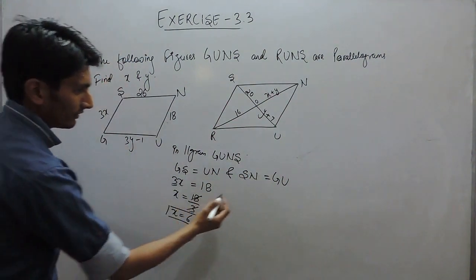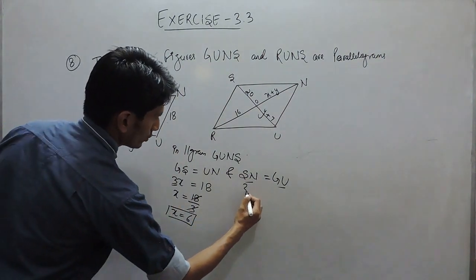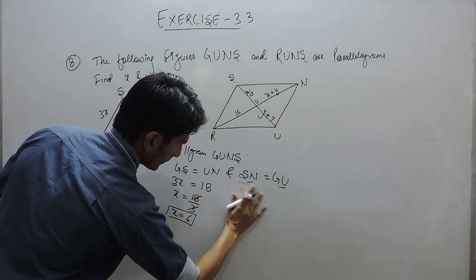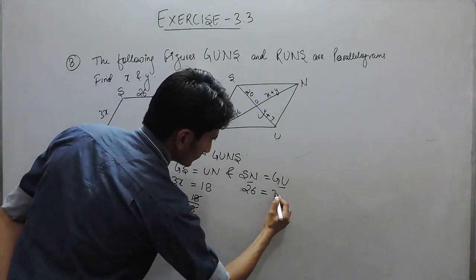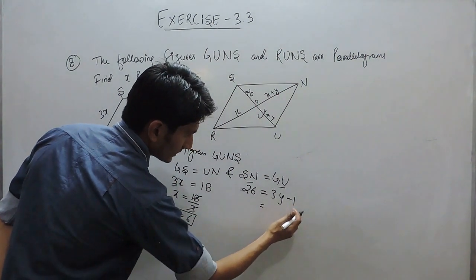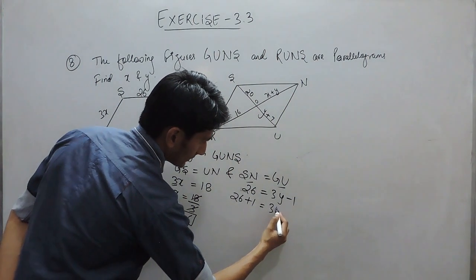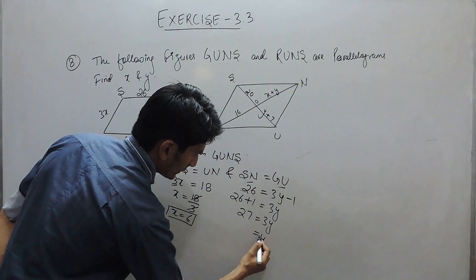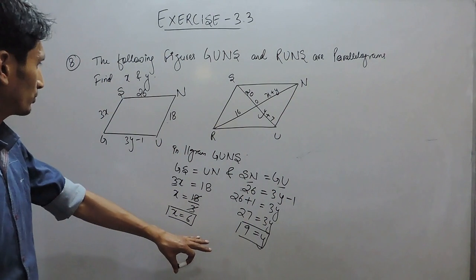Same case with this, if the opposite sides are equal, the value of SN, which is equal to 26, this is actually 26, must be equal to GU, which is 3y minus 1. We can solve this equation. When this shifted to this side, this will become positive and this will remain as it is. This is 27, this is y, y must be equal to 9. Because we can simply cancel it out.